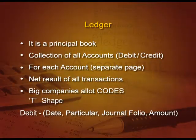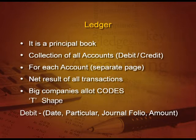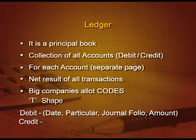The debit side contains date, particulars, journal folio and amount, and similarly, all these four columns are present on the credit side also. Debit entries are recorded on the debit side with a prefix 'To', and credit entries are recorded on the credit side with a prefix 'By'.